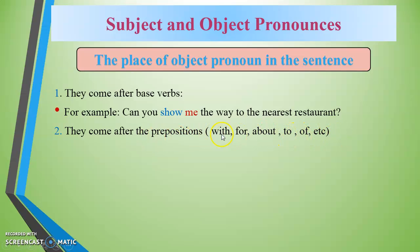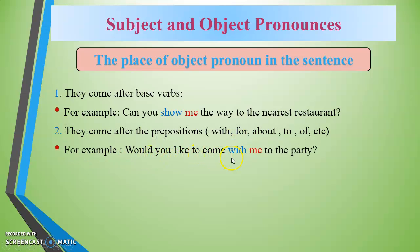After a preposition, you use the object pronoun, not the subject pronoun. For example: 'Would you like to come with me to the party?' You can also say: 'Would you like to come with us?' or 'Would you like to come with them?' — using object pronouns here.